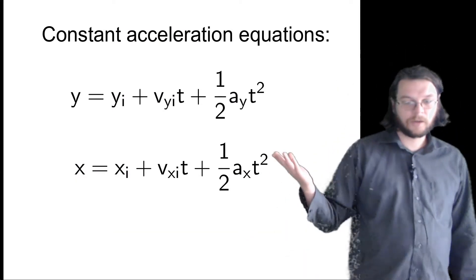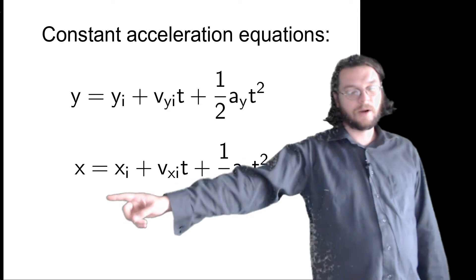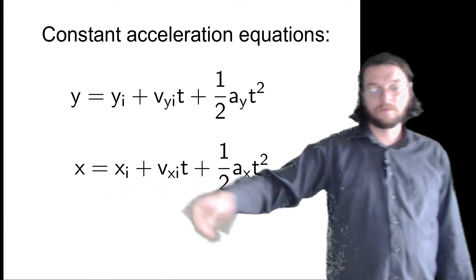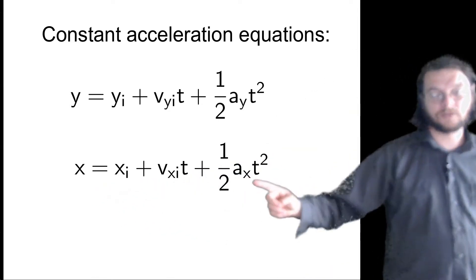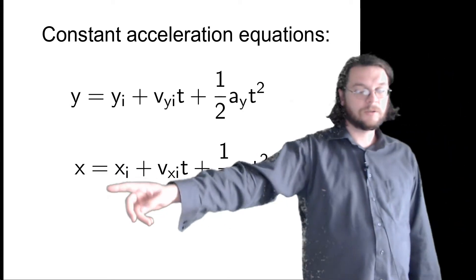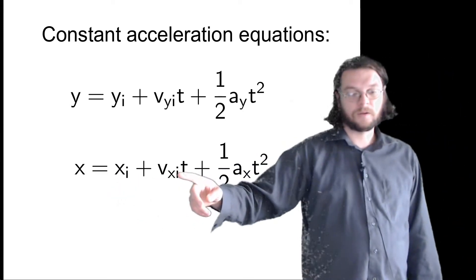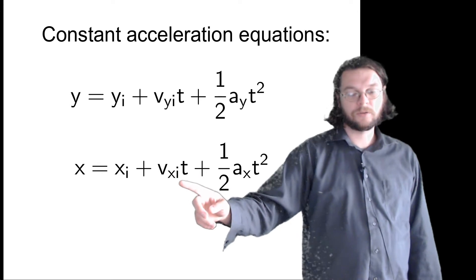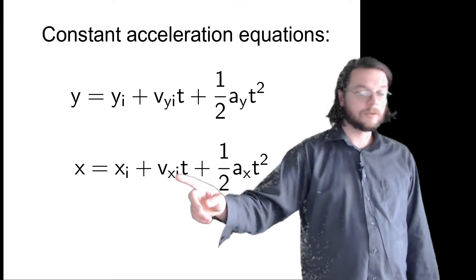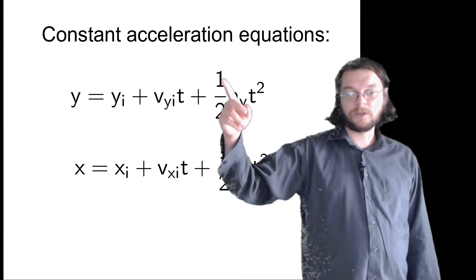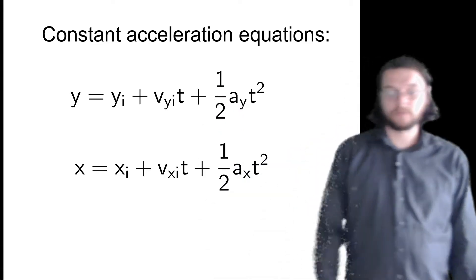Now, last lecture, we talked about how we basically derived this equation, that the x position for something that's accelerating in the x direction equals all of this. Make sure that this is the initial x velocity. Maybe this is zero, maybe it's not. The same equation applies to the y direction for the same reason.